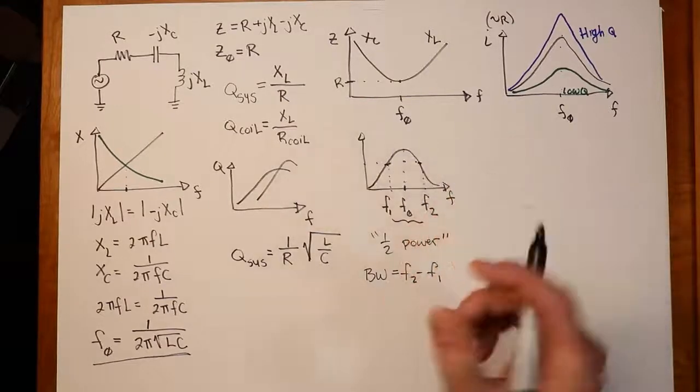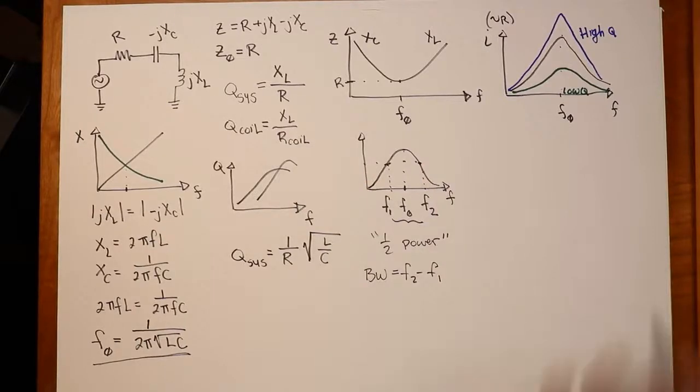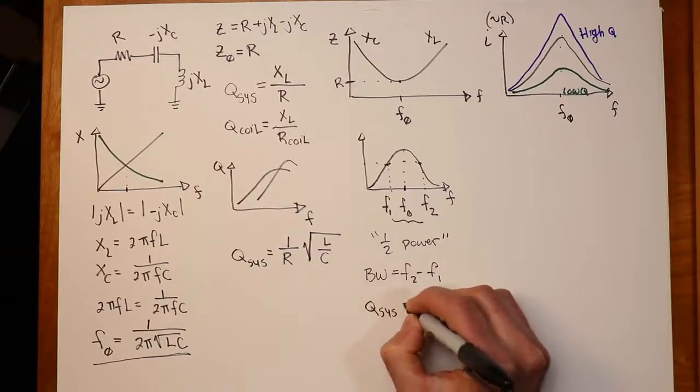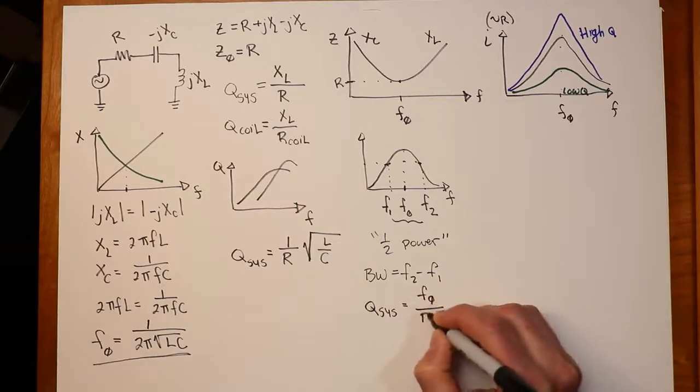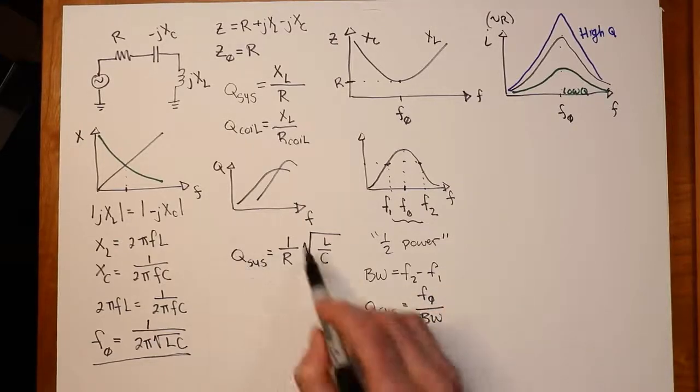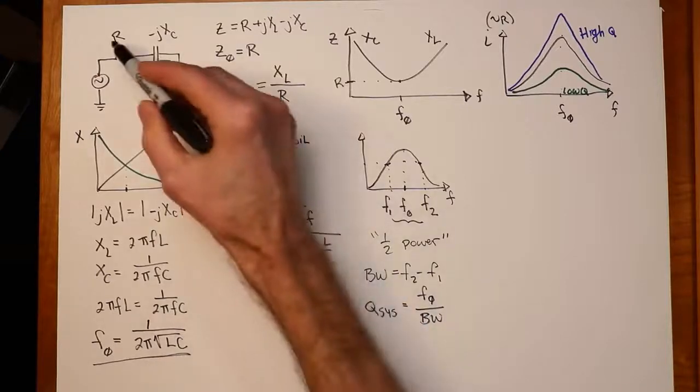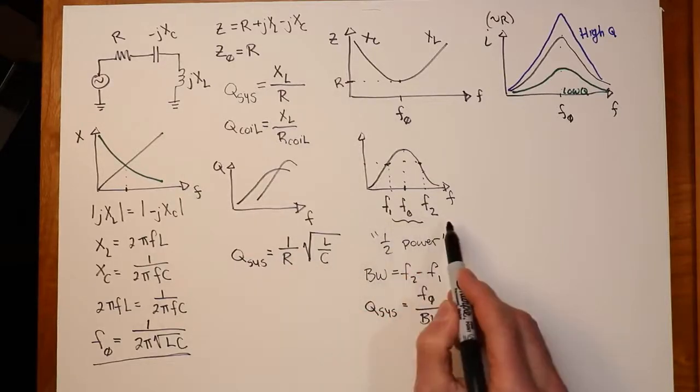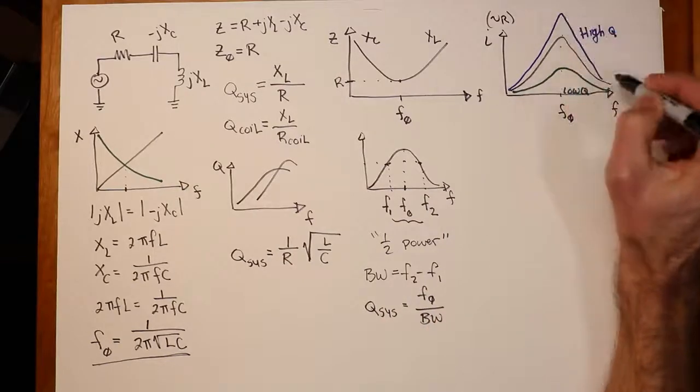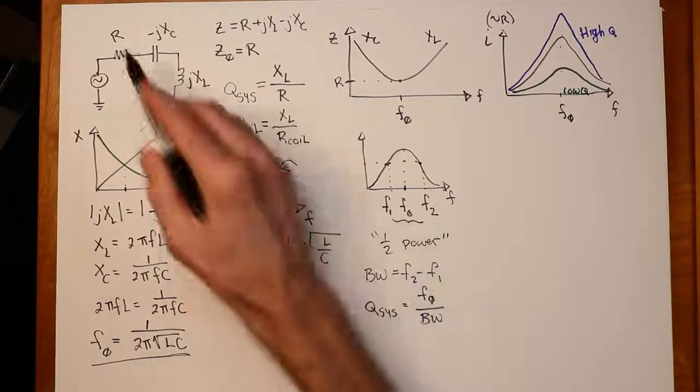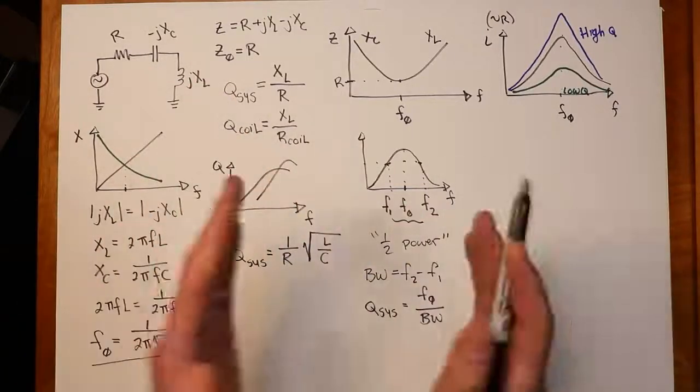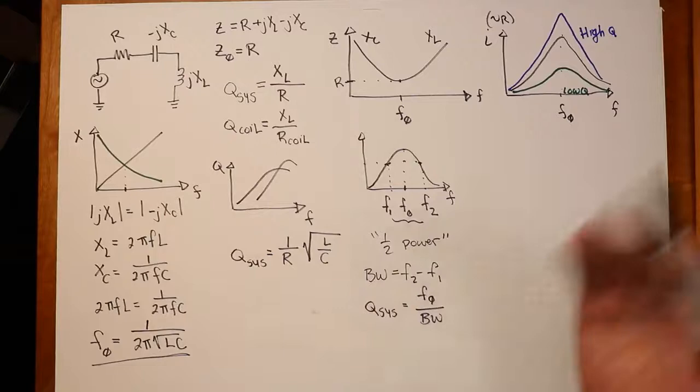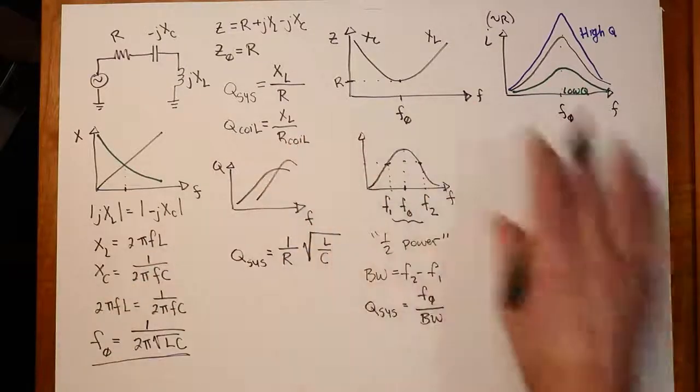It's the range of frequencies we would say that this circuit basically passes. It turns out that the system Q is equal to the center frequency, the resonant frequency, divided by the bandwidth. So, there's a nice relationship between the system Q, which, again, is controlled by R and the ratio of L and C, that system Q and this bandwidth, which defines f1 and f2. So, in other words, whether we get a blue curve, a black curve, or a green curve is controlled by either that resistance or the LC ratio.